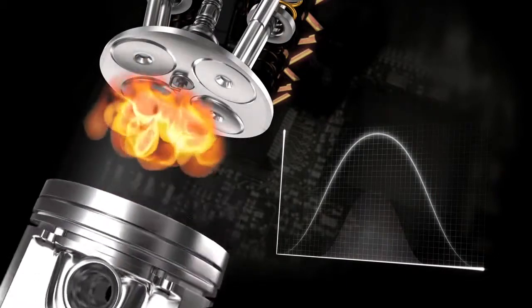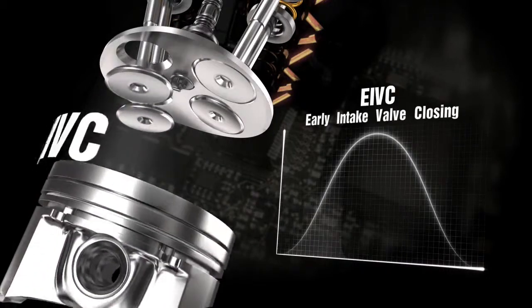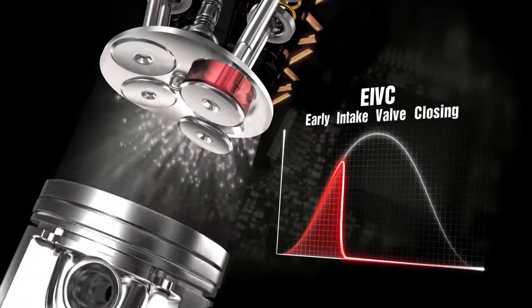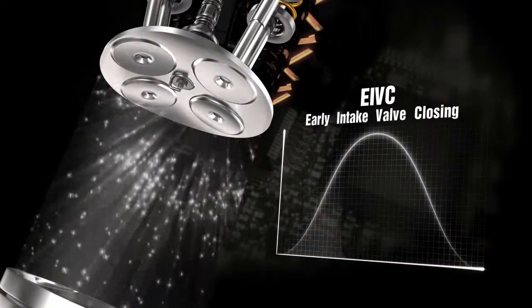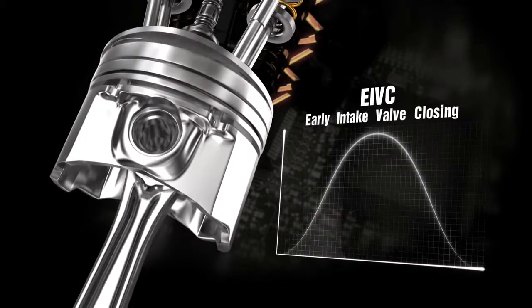At medium-low RPM torques and engine partial load, EIVC, early intake valve closing, optimizes volume efficiency and reduces pumping losses. Undesired back flow into the manifold is avoided and air mass trapped in the cylinder optimized.